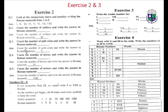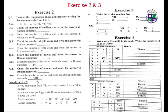Count the number of gold coins and write the answer in Roman numerals: five. Count the number of horses and write the answer in Roman numerals: four. Count the number of arrows and write the answer in Roman numerals: eight. Numbers nine and ten.